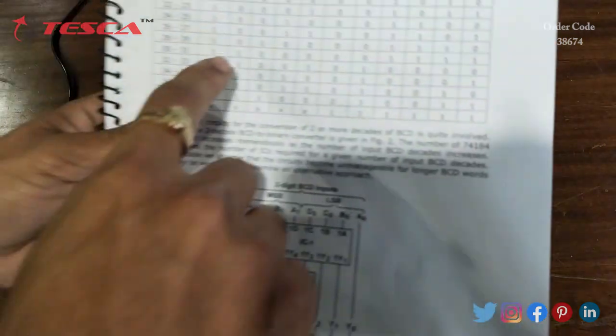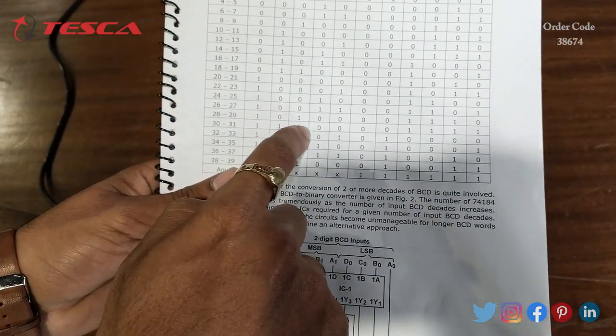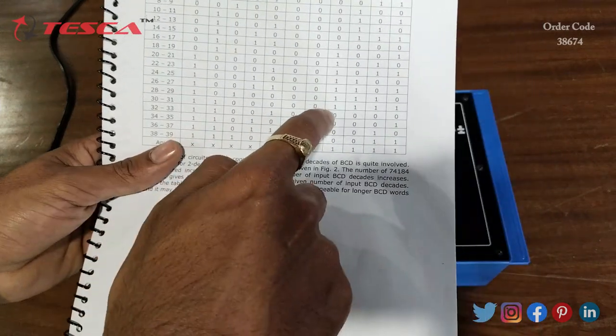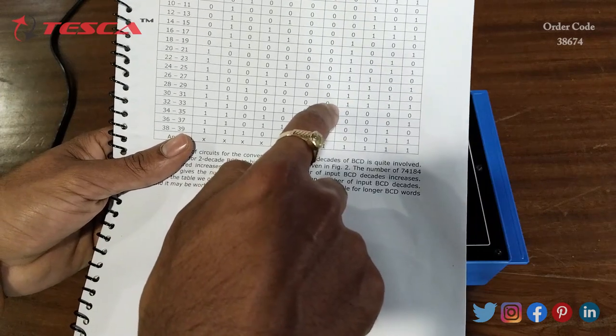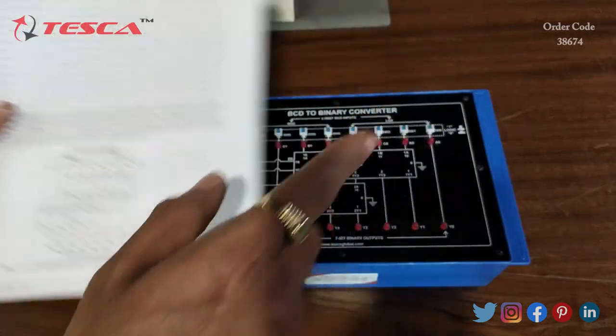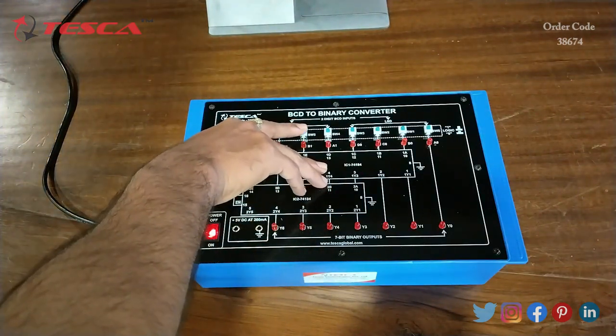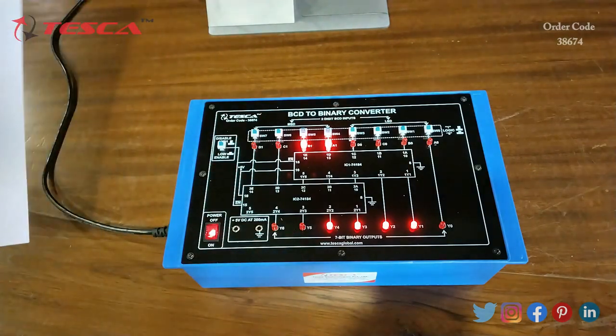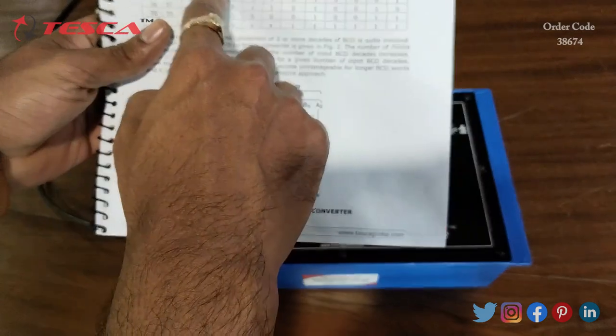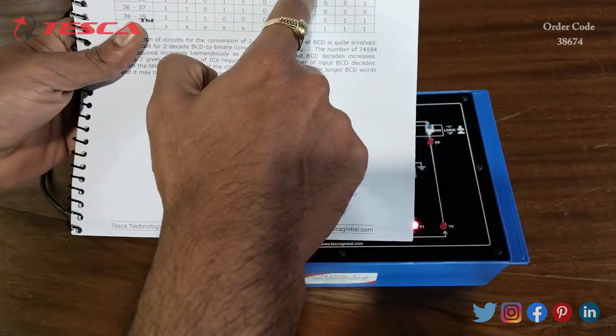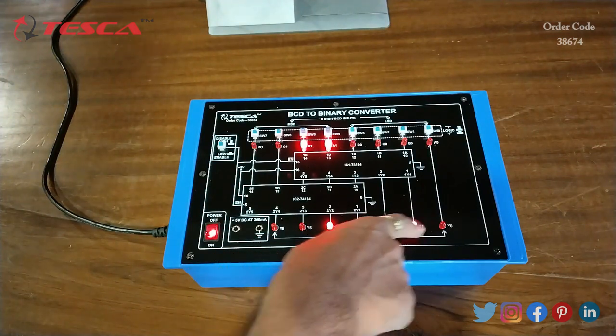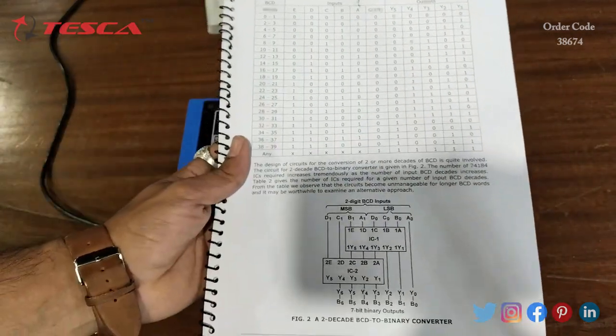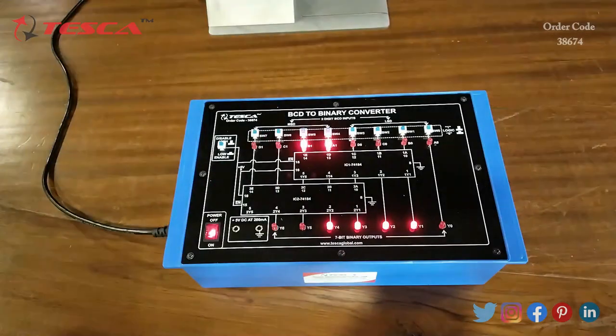Now let's suppose we are giving input as 11000, so 1 at E and 1 at D. The output is Y5 is 0 and Y4 Y3 Y2 Y1 are 1. Let's give this input: E1 and D1. We are getting the same output as mentioned in the manual. Here you can see Y5 is 0 and all the rest of the outputs are 1. Similarly you can give inputs according to this truth table and get the similar output using this kit.